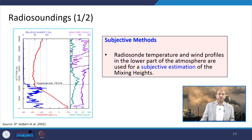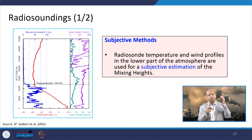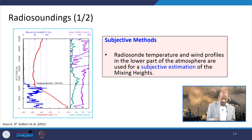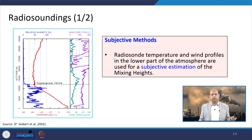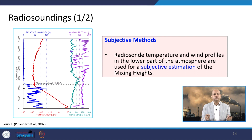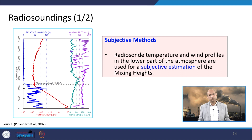Within radio sounding, the subjective method uses the temperature profile and wind velocity profile: an expert identifies where the temperature, rather than continuing to decrease with altitude, remains almost constant, and judges that as the mixing height. Through the combination of wind direction, wind profile, and temperature profile, an expert can find the mixing height — this is the subjective method.